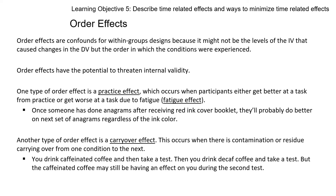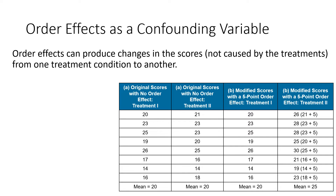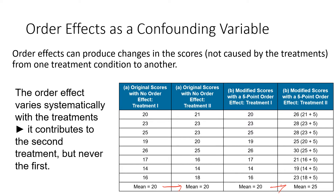So what do we do about order effects? One approach is to control time. If you've got a time-related threat such as history or maturation, you reduce the amount of time between treatment conditions — shortening the time decreases history or maturation effects. However, there's a trade-off: increasing the time between treatments increases the risk of time-related threats to internal validity, while shortening the time increases the likelihood that practice, fatigue, and carryover effects will influence the results.